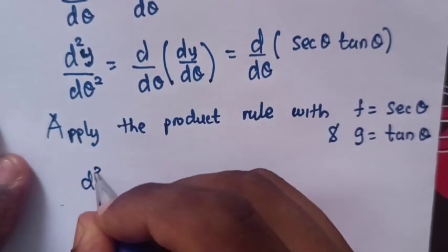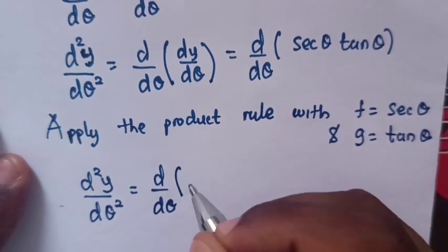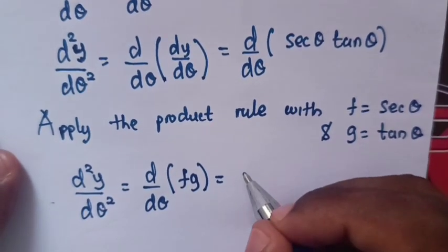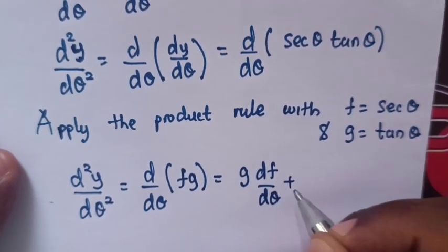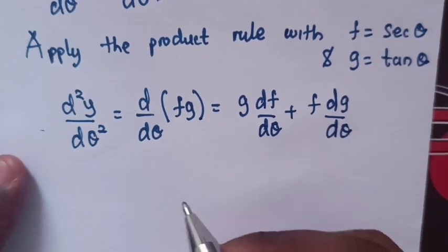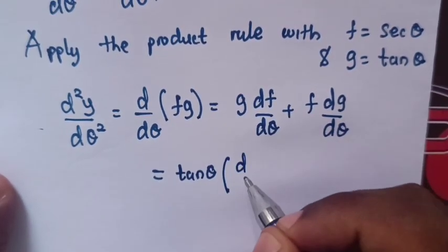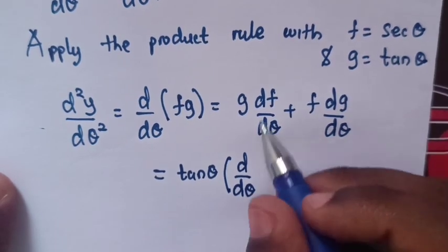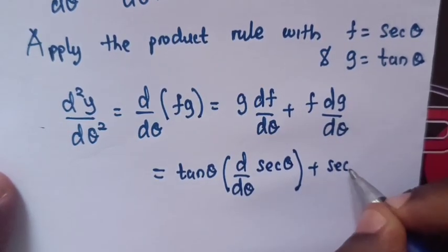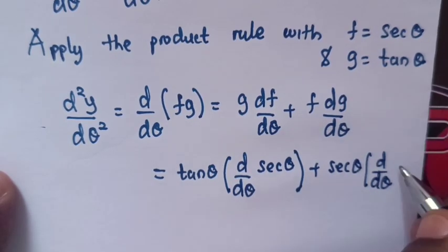So, d²y/dθ² is equal to d/dθ of sec θ tan θ. The formula for this is g times df/dθ plus f times dg/dθ. Here, g is tan θ times d/dθ of f, and f is sec θ, plus f which is sec θ times d/dθ of g, where g is tan θ.